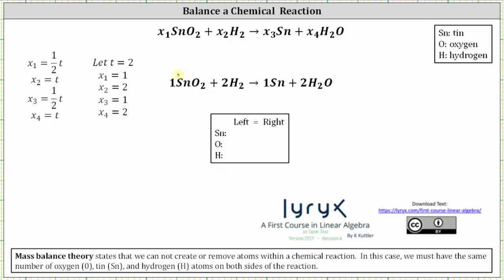On the left, we have one atom of tin. On the right, we also have one. Looking at oxygen, we have two atoms of oxygen on the left, and we also have two on the right. Notice how we have a coefficient of two times one atom of oxygen, so two is equal to two — that's true. And then for the hydrogen, we have four atoms of hydrogen on the left. On the right, we also have four atoms of hydrogen. So notice how the chemical reaction is balanced. I hope you found this helpful.